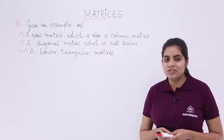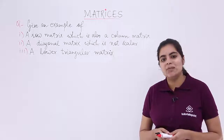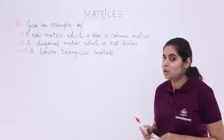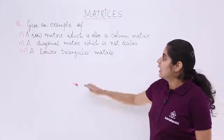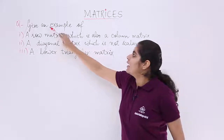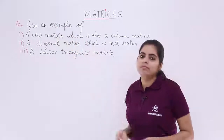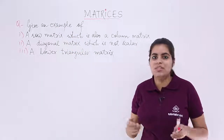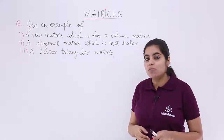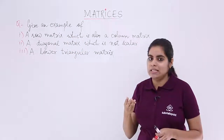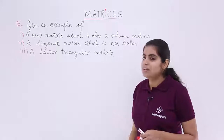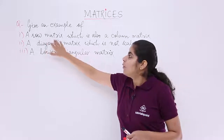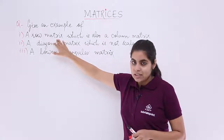Let's read the question together and see what it has to say. The question is: give an example of the three parts one by one. The first part is — a row matrix.